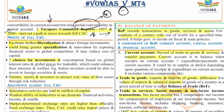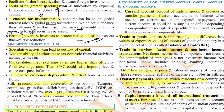Positives of capital account convertibility: it will fuel further liberalization, bring in more investments, lead to more specialization, spur innovations due to high competition, increase investment choices for people — for example, Indian investors will be able to invest in foreign securities — and it permits savers and investors to protect the real value of their assets. Demerits: it will lead to more volatility in the market, more speculative activity which would hugely impact the Indian investment sector, and it will weaken the ability of authorities to tax domestic financial activities, income, and wealth.